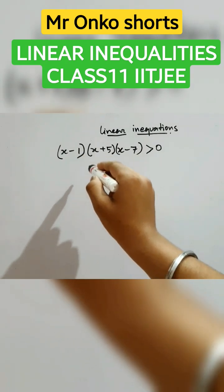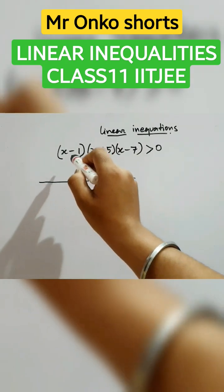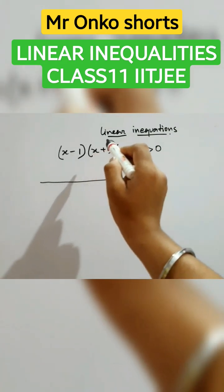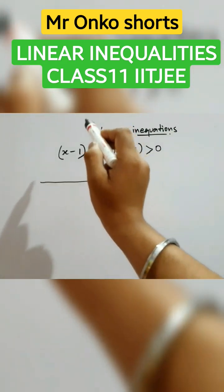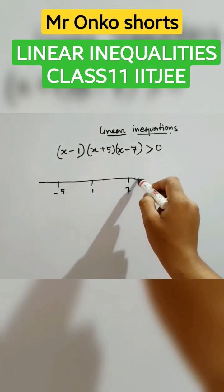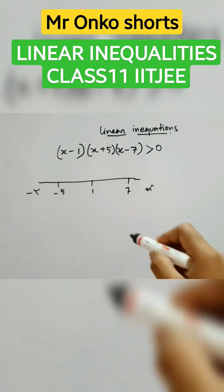So first of all, let's draw the number line. Now, these three factors will provide the critical values as minus 5, plus 1, and plus 7. That is minus 5, plus 1, and plus 7, up to plus infinity and from minus infinity.